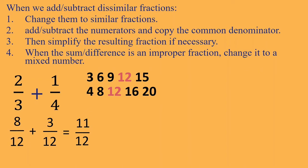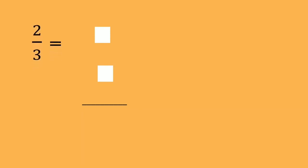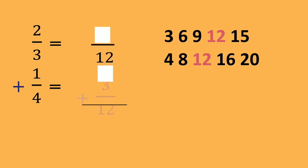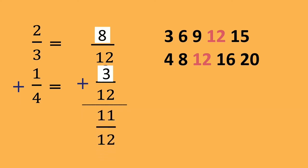Let us try the same example using a vertical format, since some students prefer it over the horizontal method. Either way, we list the multiples, find the LCD which is 12, then: 12 divided by 3 is 4, 4 times 2 is 8. 12 divided by 4 is 3, 3 times 1 is 3. Then add: 8 plus 3 is equal to 11 over the common denominator 12. Whether you prefer horizontal or vertical format, it's fine — what matters is that your answer is correct.